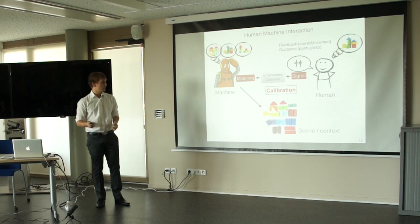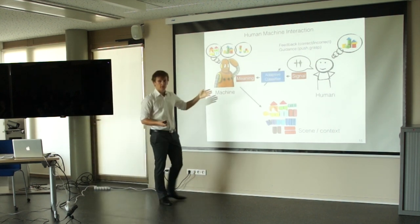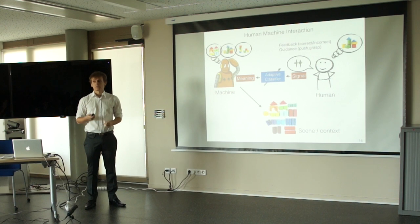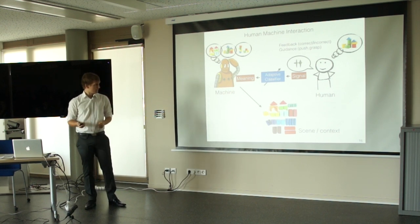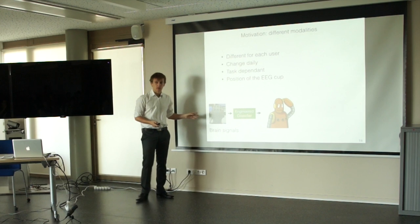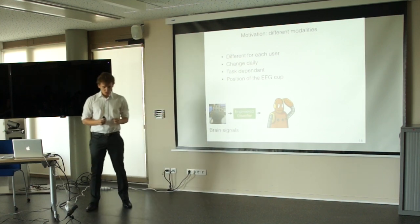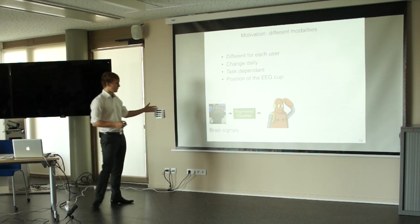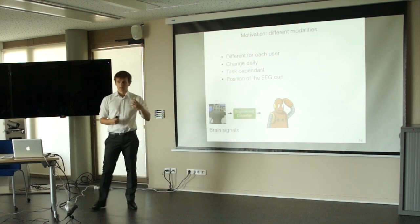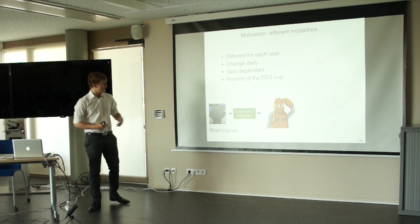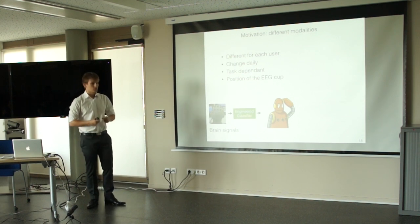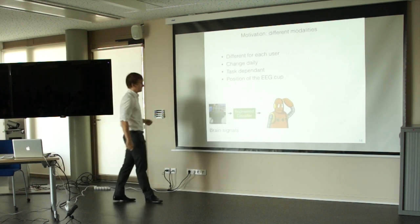What we want to do in this work is to replace this engineered classifier that requires the engineer with an adaptive one — a classifier that does not require the engineer to enter the loop. We want to do this because signals are changing all the time. Brain signals, which will be the signal we consider most in this presentation, are different for each user. You cannot take a model trained on one user and use it for another. They also change daily — you use them one day and the next day they are different, so you need to calibrate again and bring the engineer back.